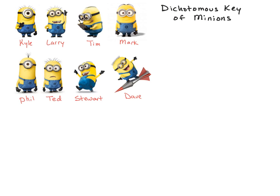The first thing we do is try to find a way to divide the group into half, or as close to half as possible. Sometimes it's hard to make them exactly half. The more you make them into halves, the smaller your key will actually be. So I'm going to start with something very simple. If you look at the minions here, you'll notice that some have one eye and some have two. So the first thing I'm going to write down is one A and one B — one eye and not one eye. It's better to do exact opposites.